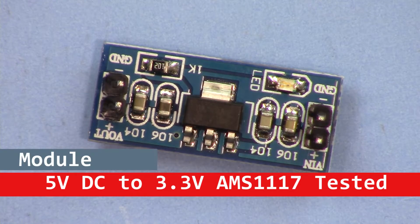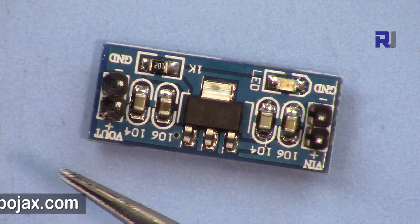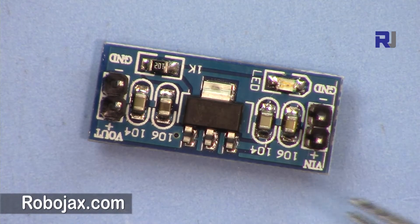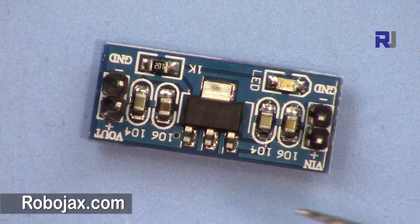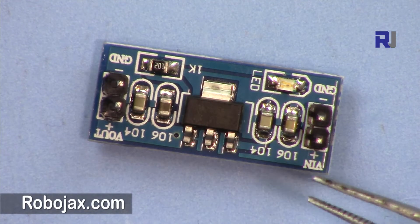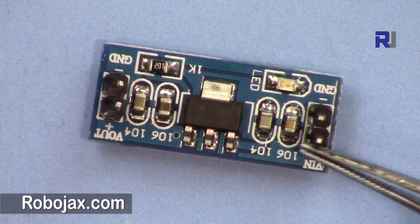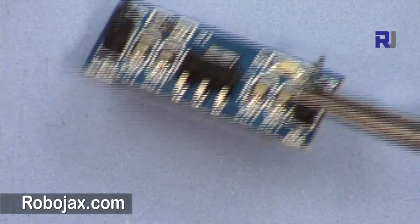Hi, welcome to another video tutorial from Robojax. In this video I'm introducing this 5 volts to 3.3 volts voltage regulator for Arduino. This is based on AMS 1117, it can handle up to 1 ampere. The size is very tiny. Also, we are going to test it practically by connecting an electronic load to it to see if it can handle up to 1 ampere.